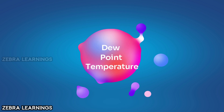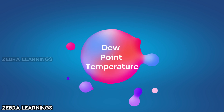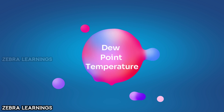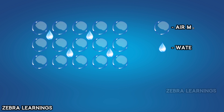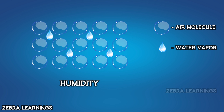The dew point temperature is a simple topic to understand. The air in our atmosphere contains a mixture of water vapor. The measurement of water vapor present in the air is called humidity.